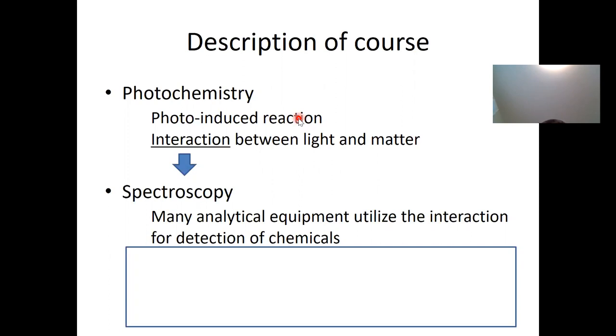But even if such reaction doesn't happen, there's always some level of interaction between the light and matter. And this kind of interaction is utilized for many spectroscopy. Actually, many analytical equipment use this kind of interaction for detection of chemicals. So photochemistry and spectroscopy are relevant to each other.